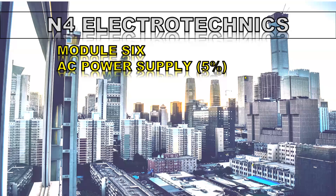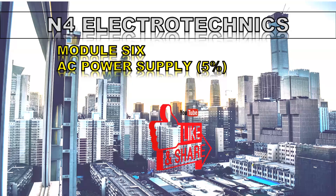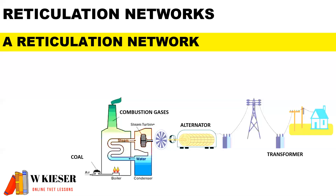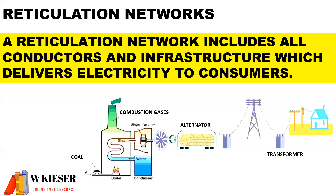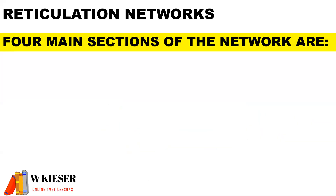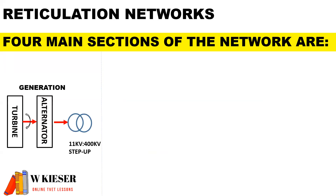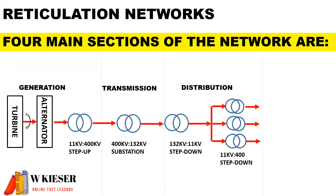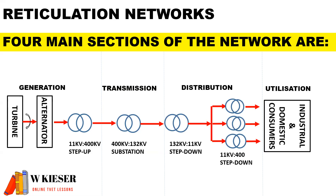Welcome to N4 Electro-Techniques, and in this video we'll be looking at AC Power Supply, which is also known as the reticulation network. A reticulation network includes all conductors and infrastructure which delivers electricity to consumers. There are four main sections of the network: the generation, transmission, distribution, and utilization.